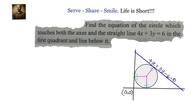Find the equation of the circle which touches both the axes and the straight line 4x plus 3y equals to 6 in the first quadrant and lies below it.